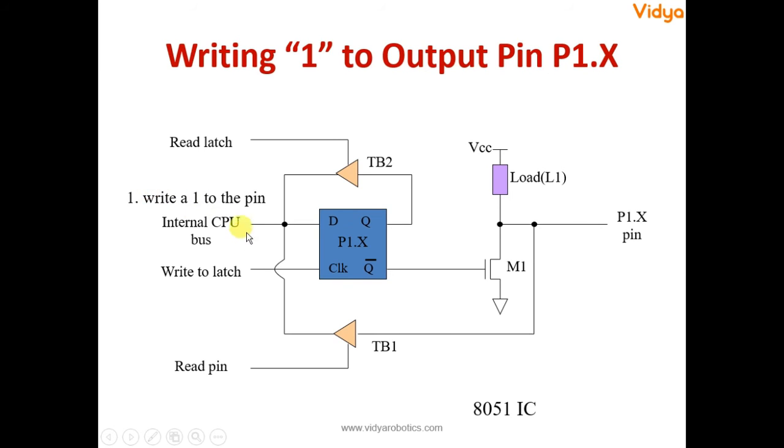Whenever we write logic 1, we write it through the internal bus to the D input of this D latch. Ultimately what happens is Q output will be 1 and Q bar output will become 0. Since Q bar output is 0, this transistor will be in off state and since it is in off state, there is no conduction and the same VCC exactly appears as it is on the port pin. So when we give 1 from the software onto the D latch, Q bar becomes 0 and because of this 0 and because of this pull-up resistor, we get a VCC or 5 volt voltage onto this pin.